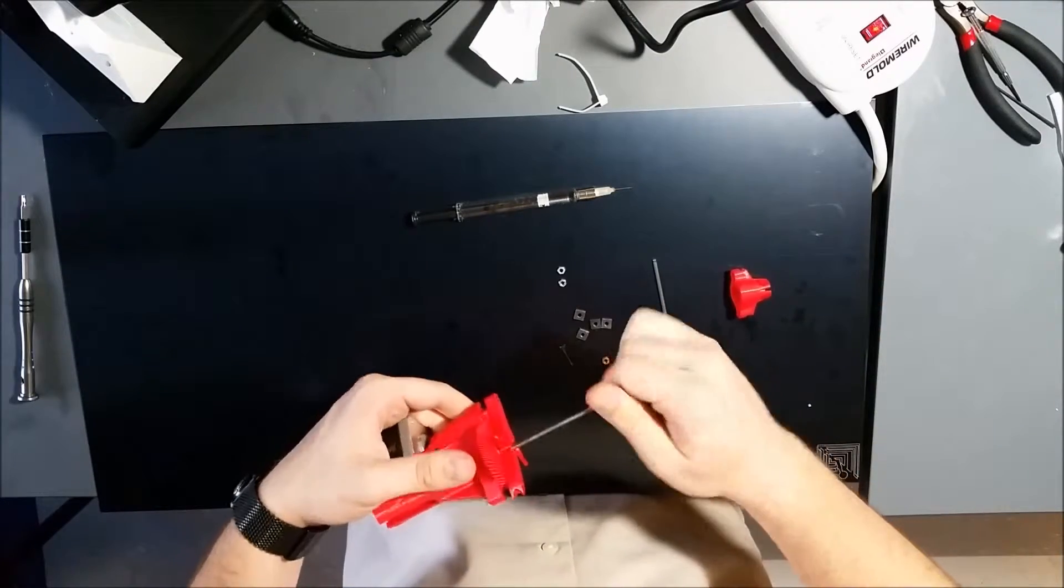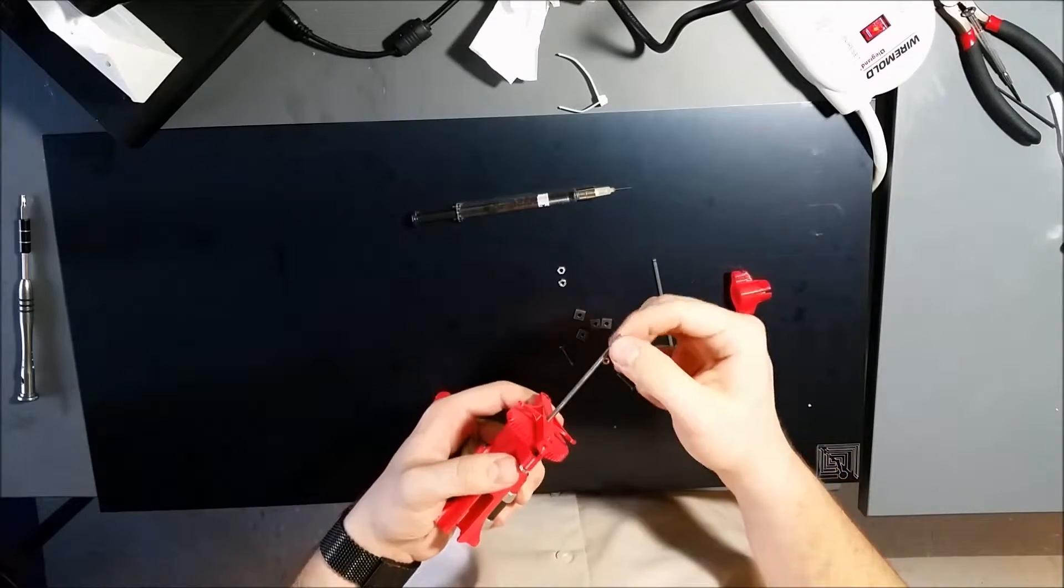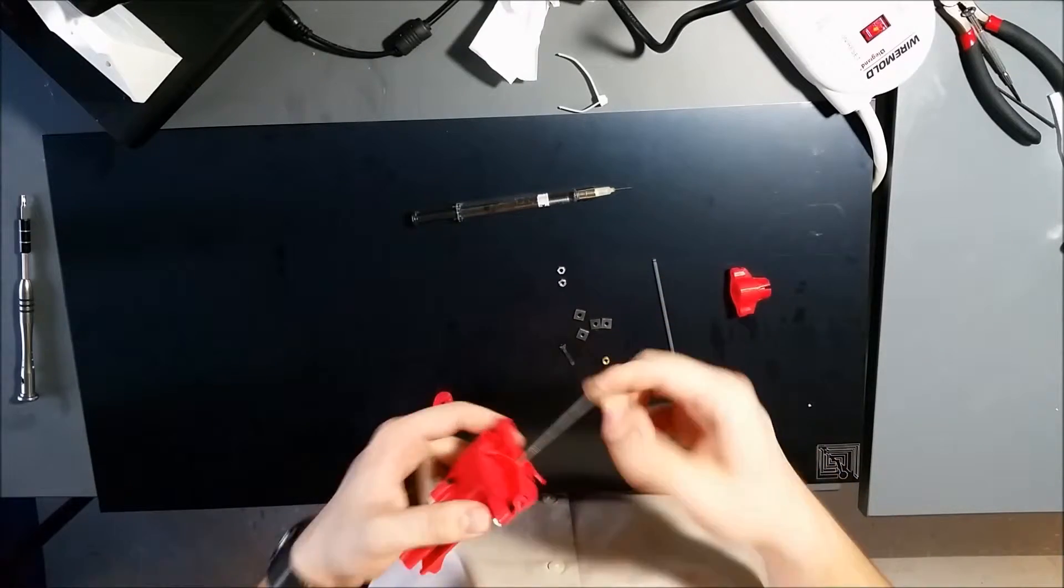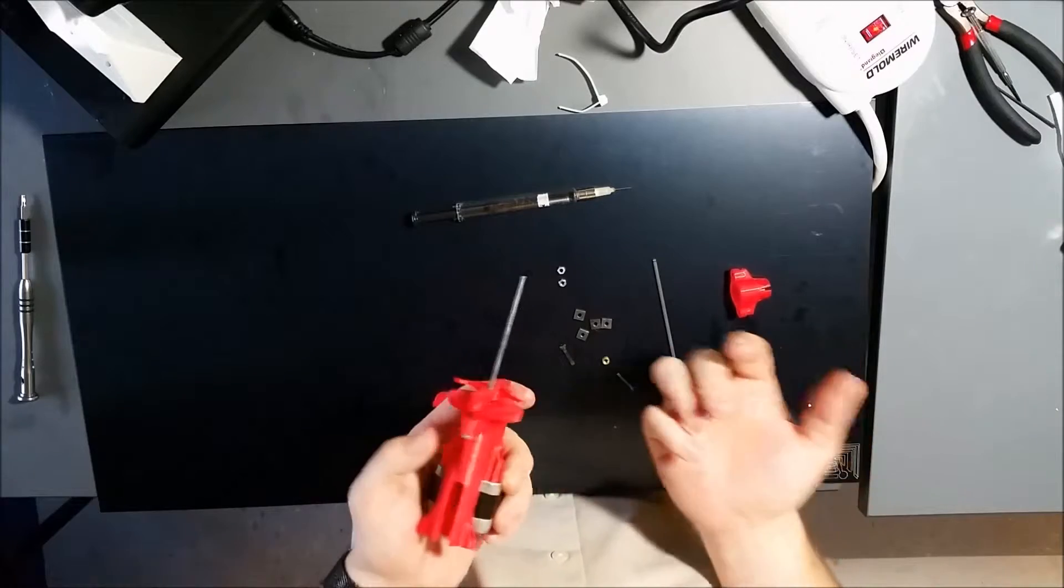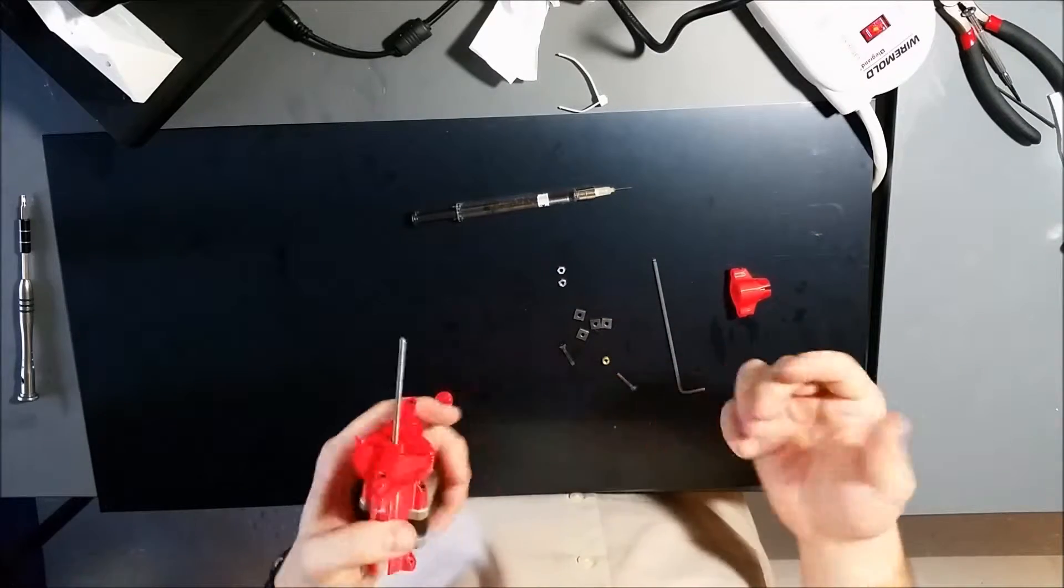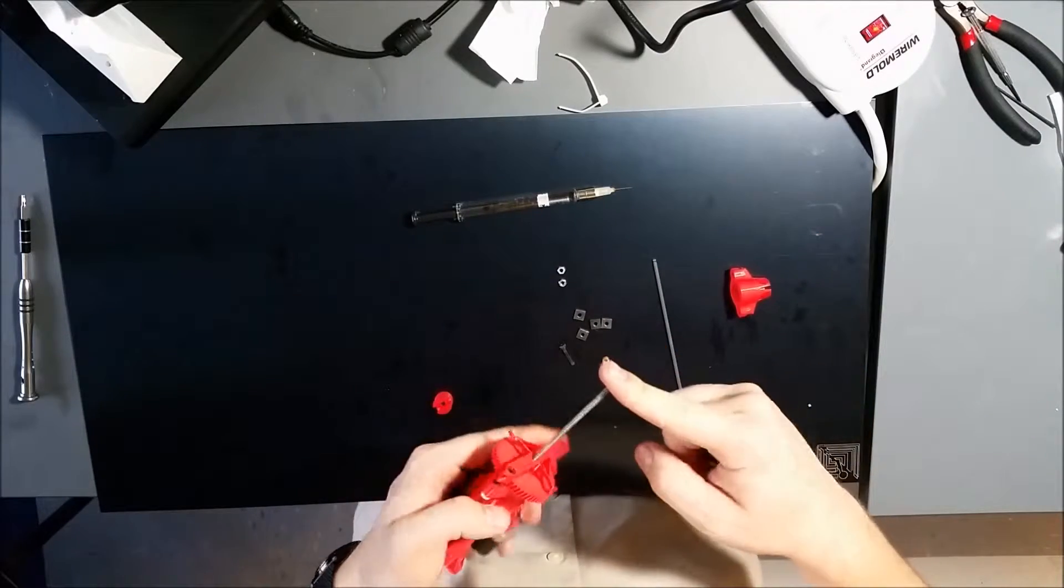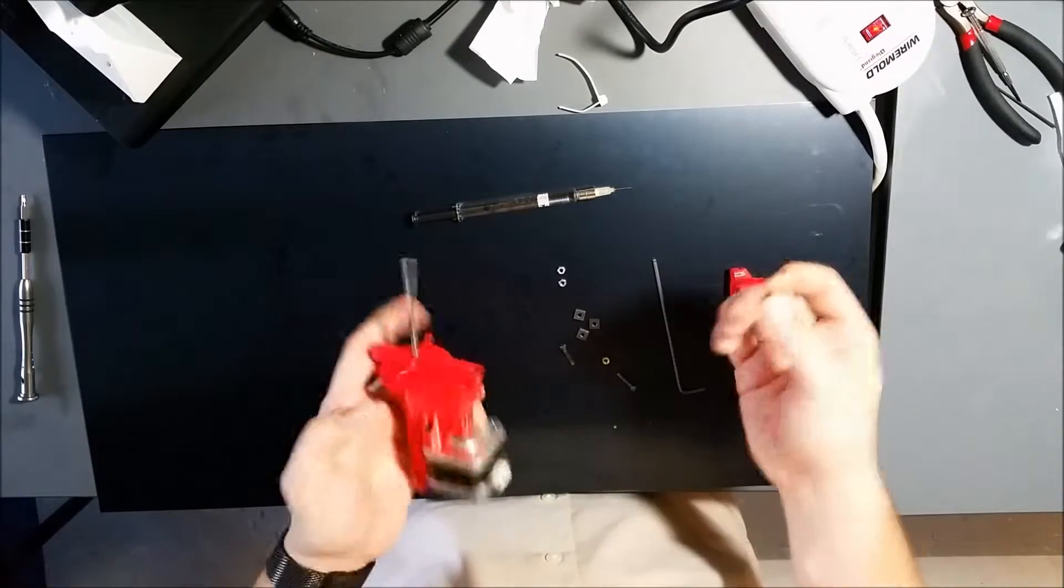So now the lead screw's in and it should be able to spin freely. But the problem is there's still going to be a little bit of play in the lead screw. And the way we chose to eliminate that was just to take a standard office rubber band and basically push the lead screw down.